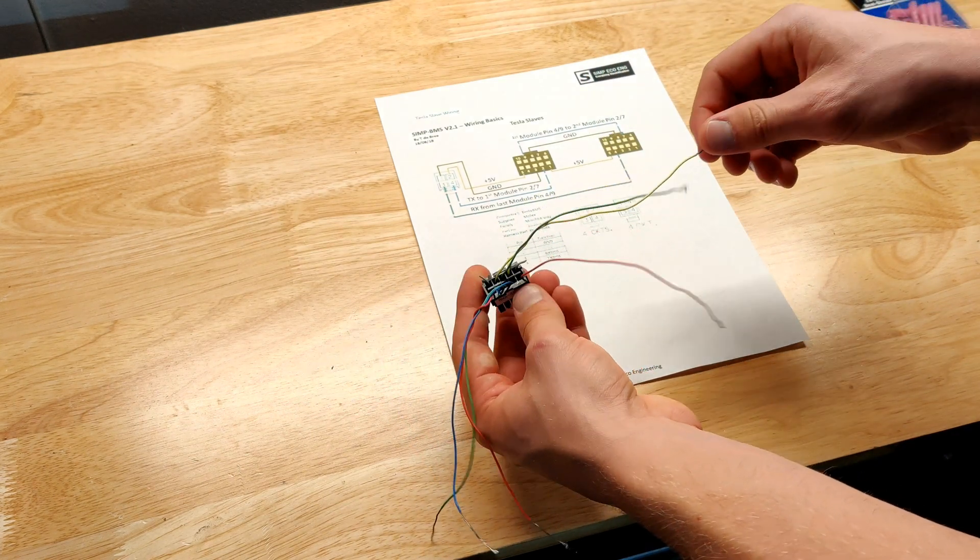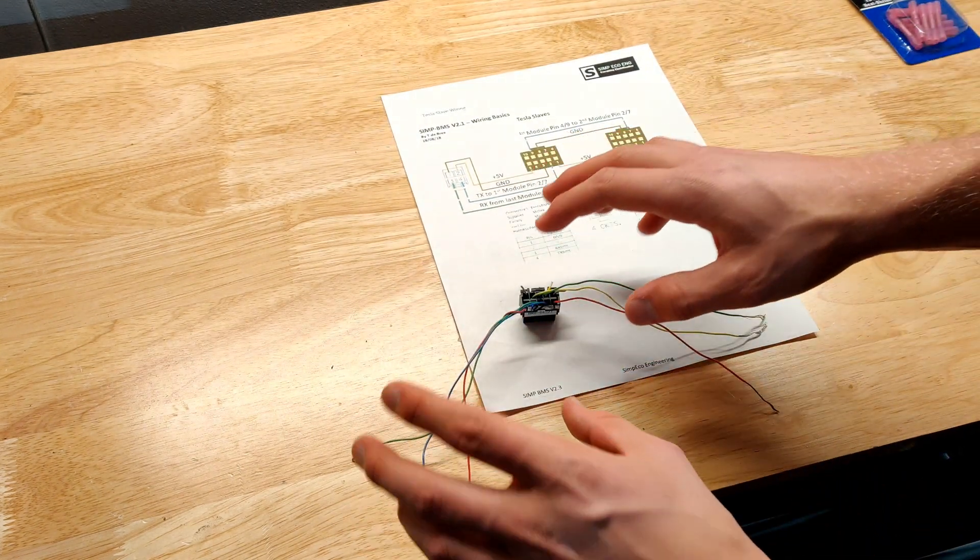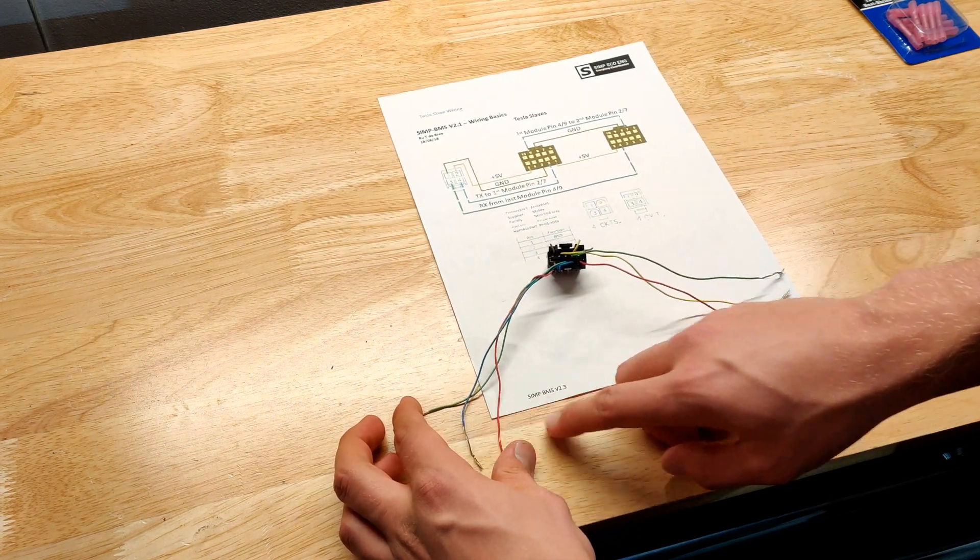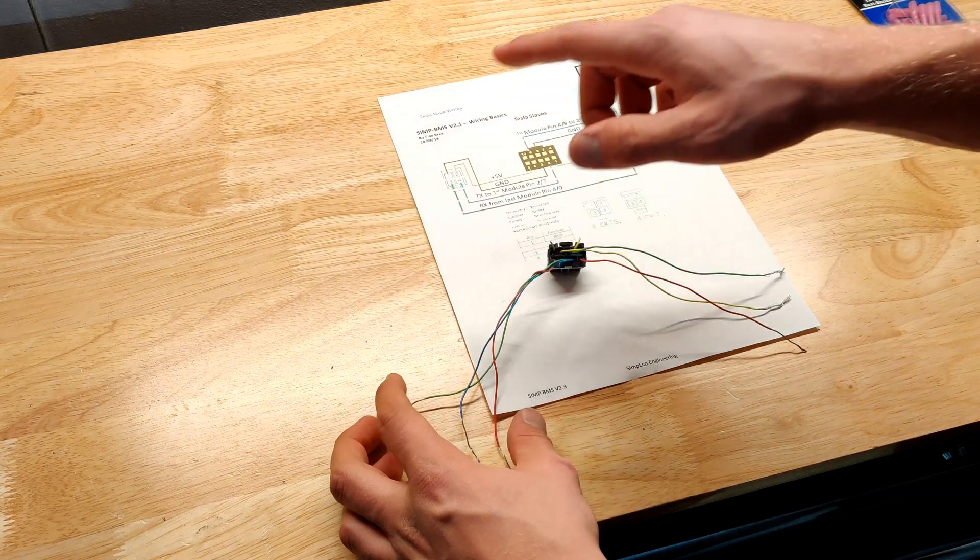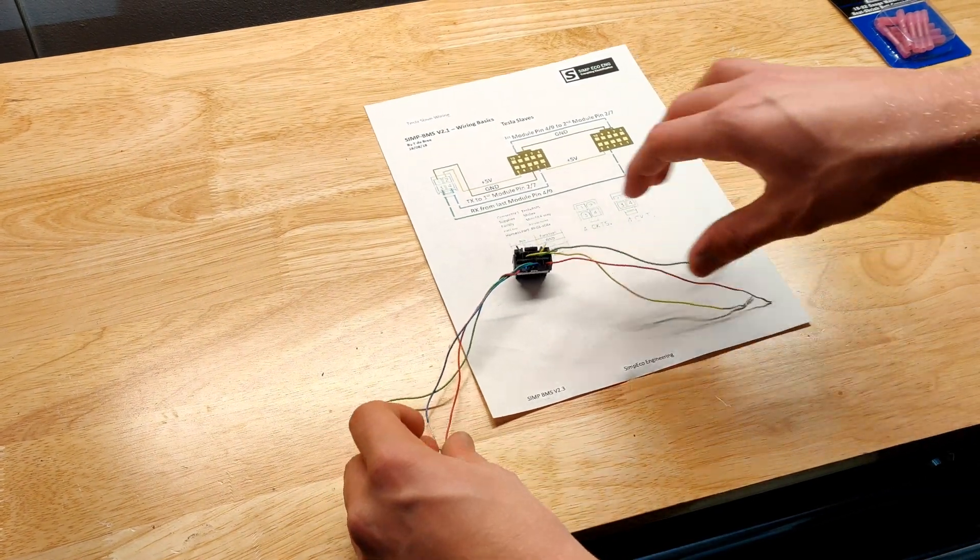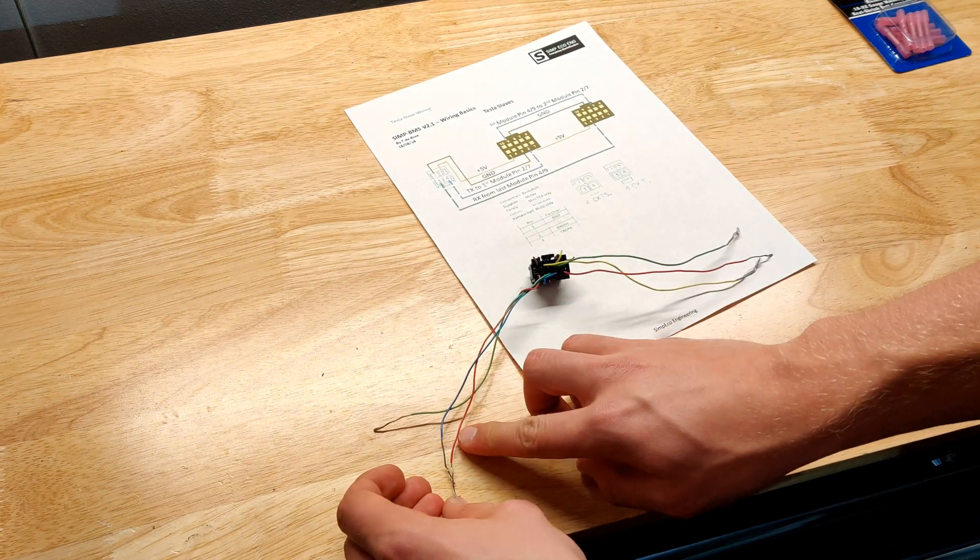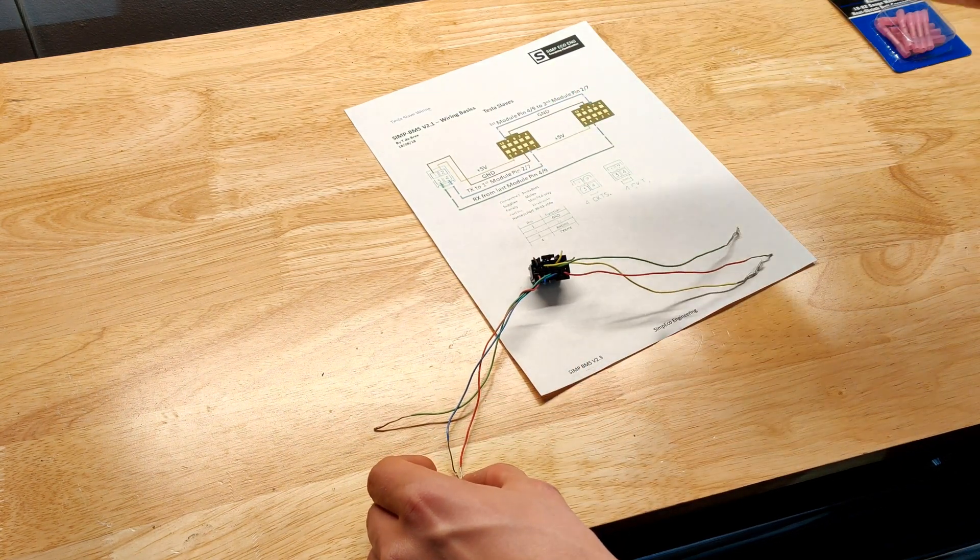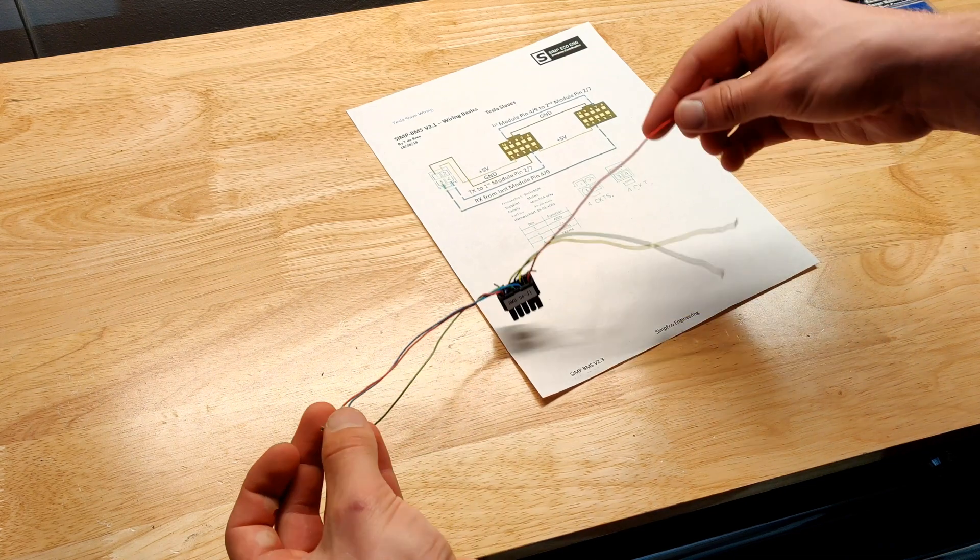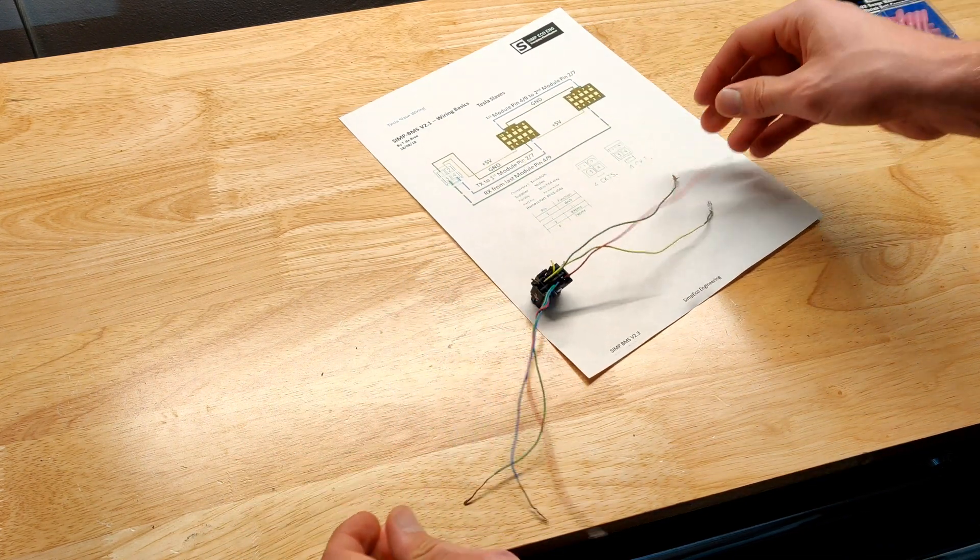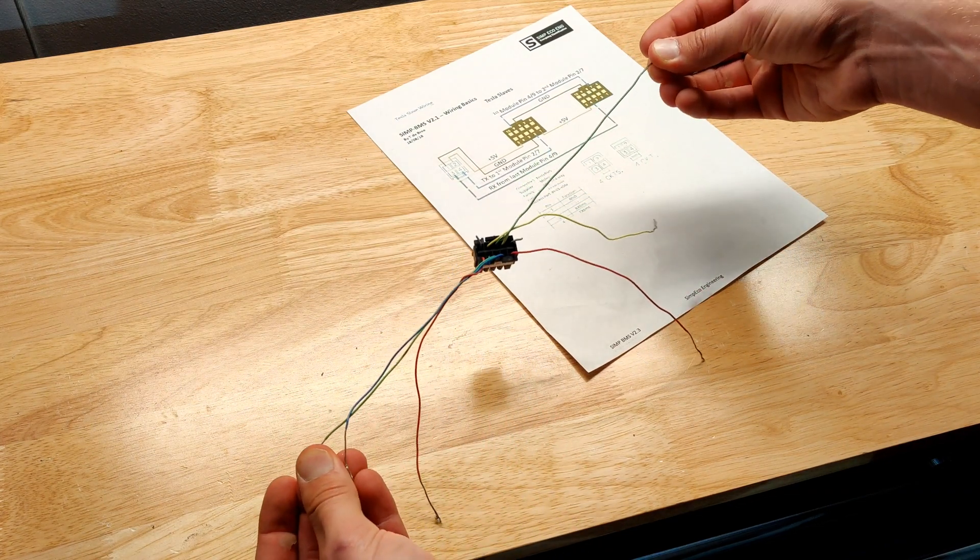Basically what you're doing with these connectors is with all of these wires, both the 5 volt ground and the communication wires, you're creating a long string from your first module all the way to your last module. For the 5 volts, it's just a string with each module being wired up to this same 5 volt power source and same ground as well.